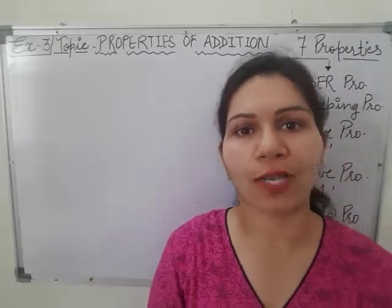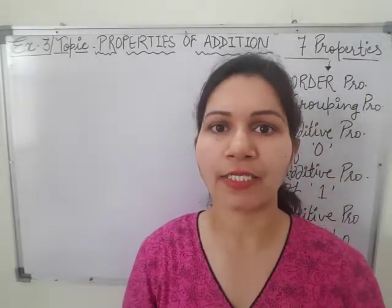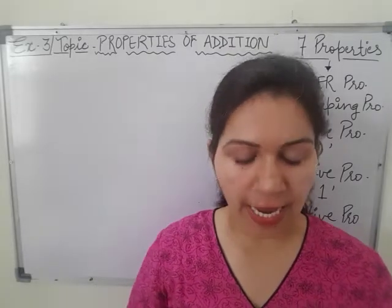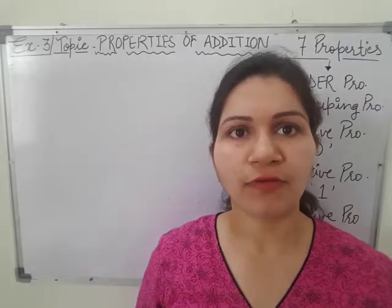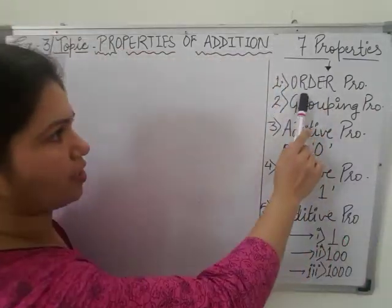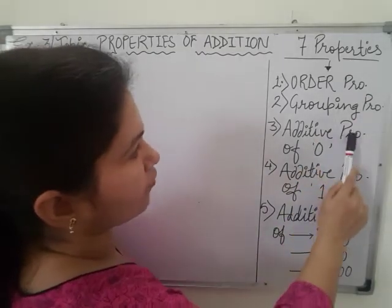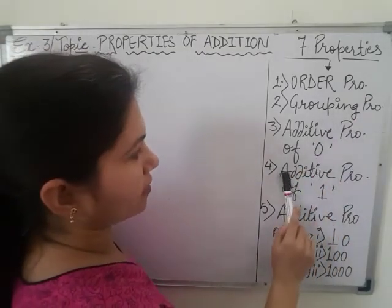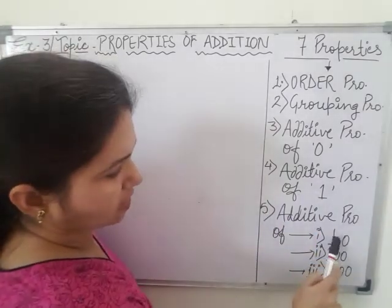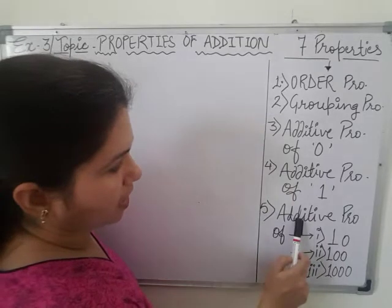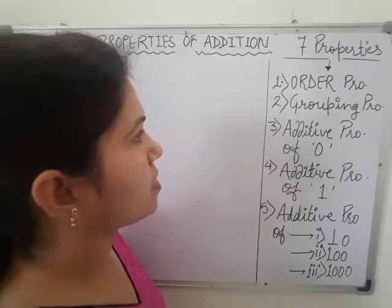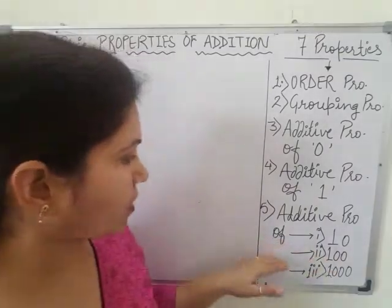Hello children, hope you all are safe and sound and you have done all the assignments given by me. As in chapter 3, we have done 4 properties of addition which are order property, grouping property, additive property of 0 and additive property of 1. And today, we will discuss about these 3 properties which are additive property of 10, 100 and 1000. So let's continue with this property.